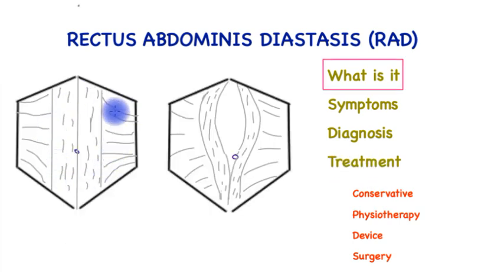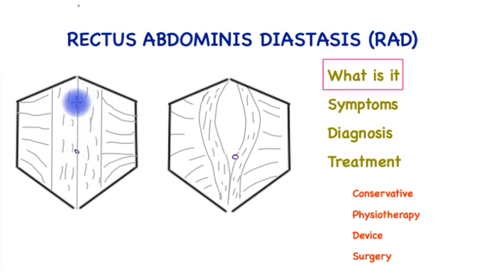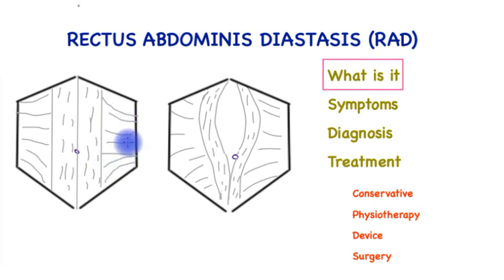In this cartoon you can see a normal abdomen with strap-like rectus abdominis muscles running from the ribcage down to the pubis on either side, connected by a thick connective tissue called the linea alba, which is generally quite strong. On the sides, supported by three layers of muscles: the external oblique, the internal oblique, and the transversus abdominis.